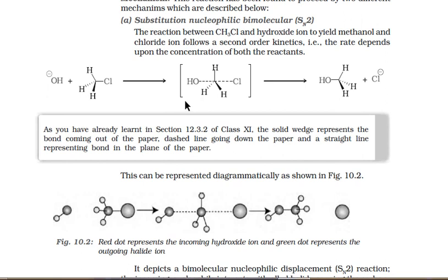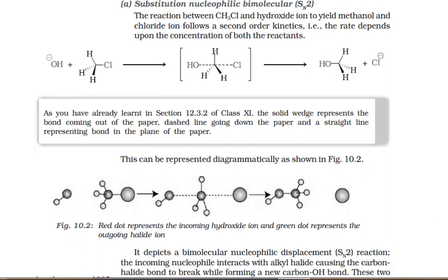In SN2, the nucleophile attaches to the same carbon from which the leaving group departs. SN2 is a single-step, concerted reaction — bond formation between nucleophile and carbon and bond cleavage between carbon and leaving group occur simultaneously. This is called a concordant reaction, and results in 100% inversion of configuration (Walden inversion). If the reactant is dextrorotatory, the product will be levorotatory.